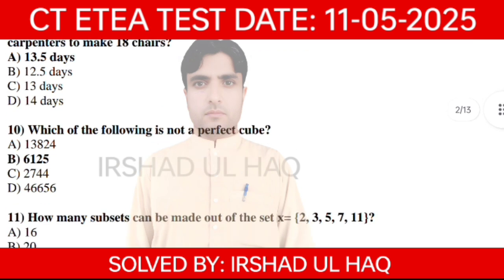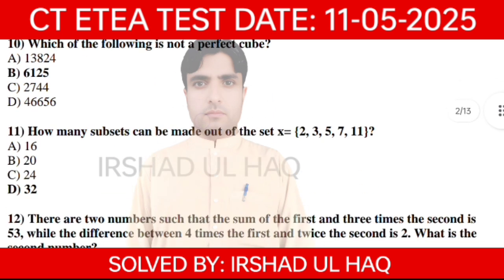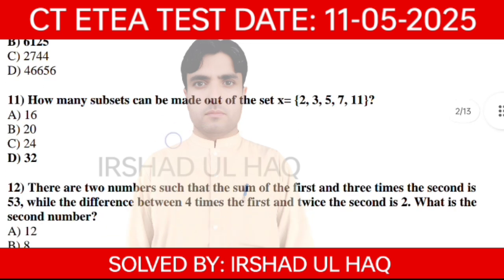Question 10. Which of the following is not a perfect cube? Option B. How many subsets can be made out of the set X? Answer: 32. D is the correct option.